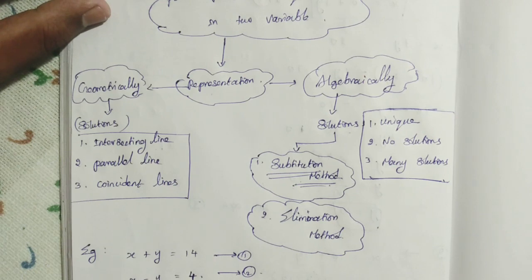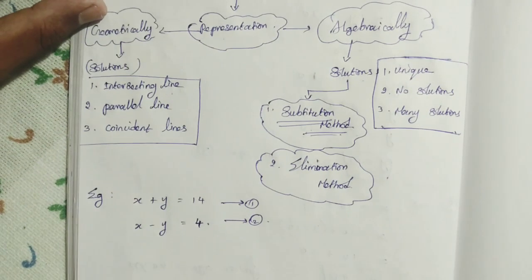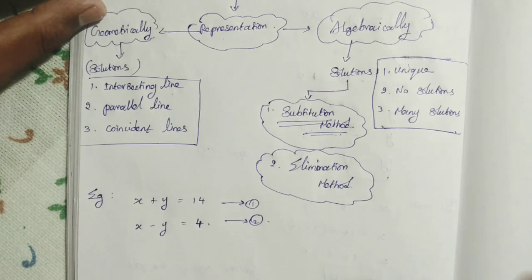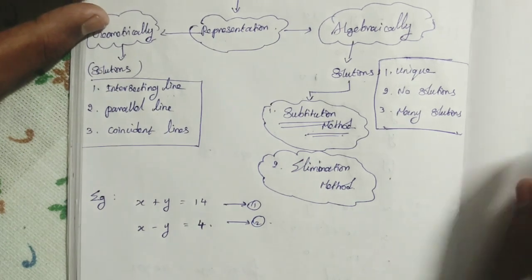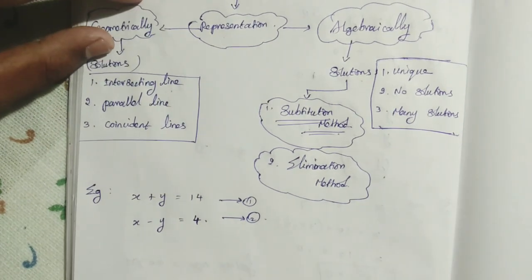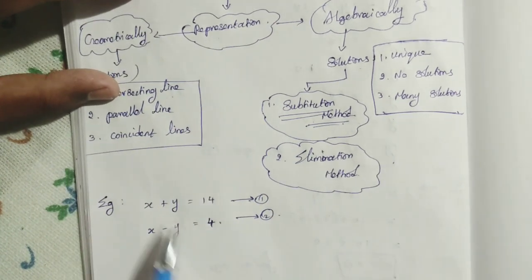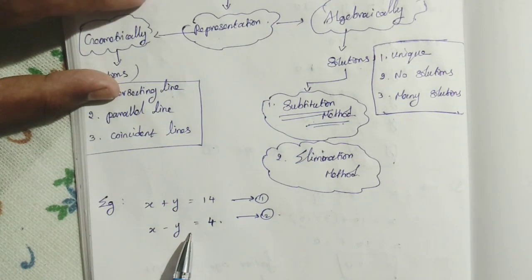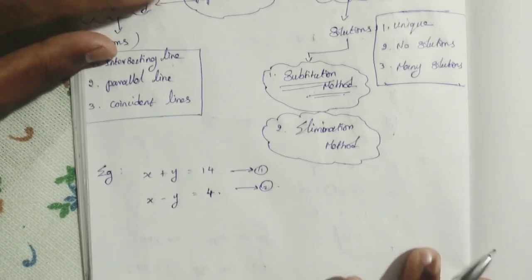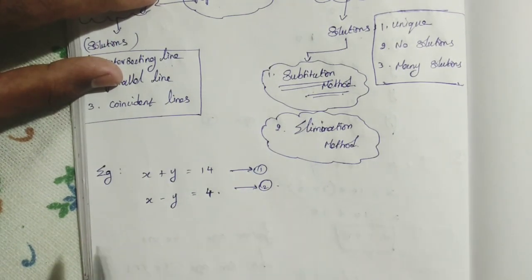How do we use the elimination method? It is more convenient than the substitution method. Let me show how it works. We consider the pair of linear equations: x plus y is equal to 14, and x minus y is equal to 4. We mark these as equation number 1 and equation number 2.